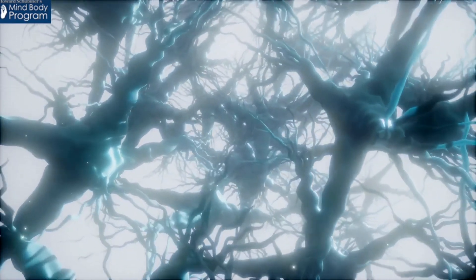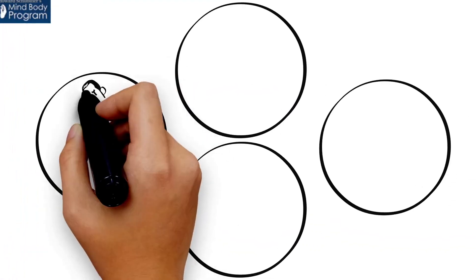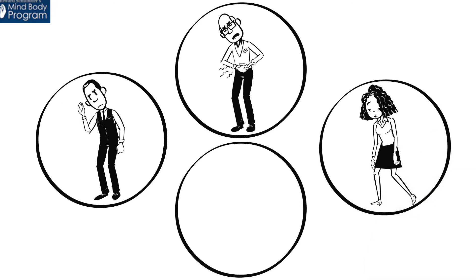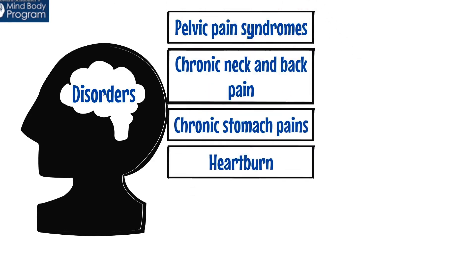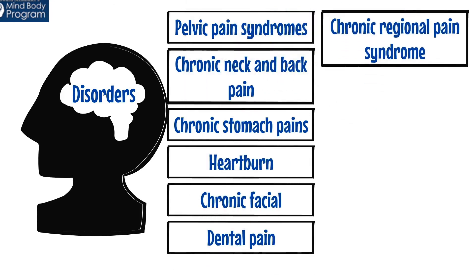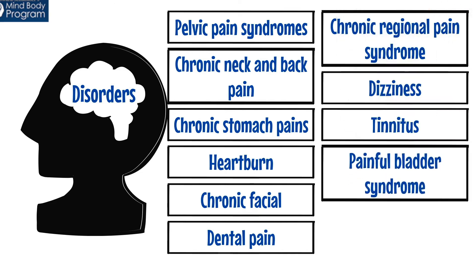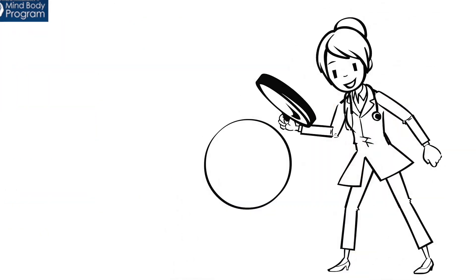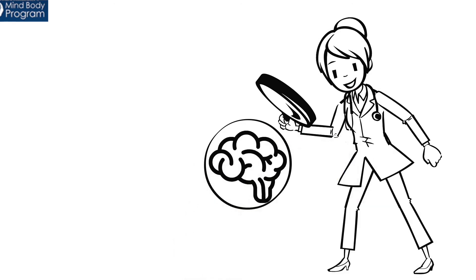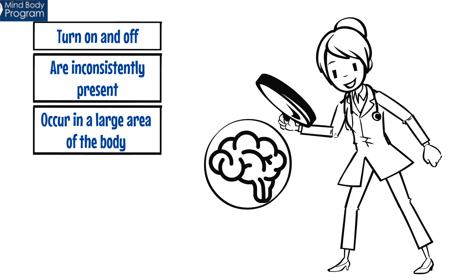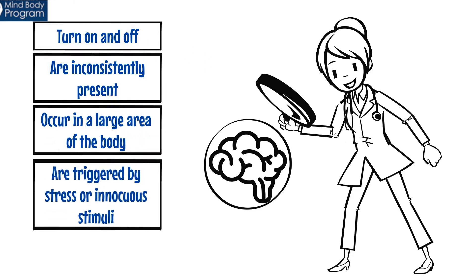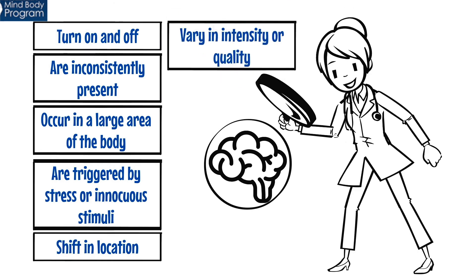There are certain disorders that are almost always neural circuit disorders, such as tension and migraine headaches, irritable bowel syndrome, fibromyalgia, and insomnia. There are many other disorders that are usually, but not always, caused by neural circuits, such as pelvic pain syndromes, chronic neck and back pain, chronic stomach pains and heartburn, chronic facial or dental pain, chronic regional pain syndrome, dizziness, tinnitus, and painful bladder syndrome. Clues that a good detective doctor can use to confirm a neural circuit disorder are pains or symptoms that turn on and off, are inconsistently present, occur in a large area of the body, are triggered by stress or innocuous stimuli, shift in location, or vary in intensity or quality.